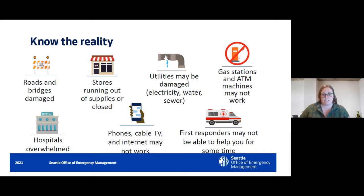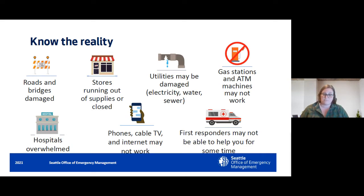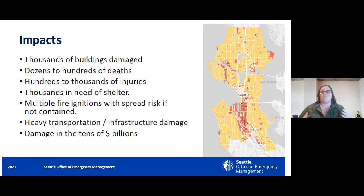There are many different impacts we could see from an earthquake. Roads and bridges might be damaged, which is the primary thing we're going to talk about in this presentation. We also might see things like stores running out of food, utilities being damaged, gas stations and ATMs not working, impacts to hospital and communications infrastructure, and first responders might not be able to get to you right away. We can expect damage to buildings, multiple deaths and injuries, widespread fires due to gas leaks, heavy transportation and infrastructure damage, and significant damages into the billions.